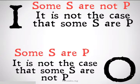Basically, the truth of either of these propositions doesn't imply anything about the other. If you try to make that implication, you commit the fallacy of illicit subcontrary.